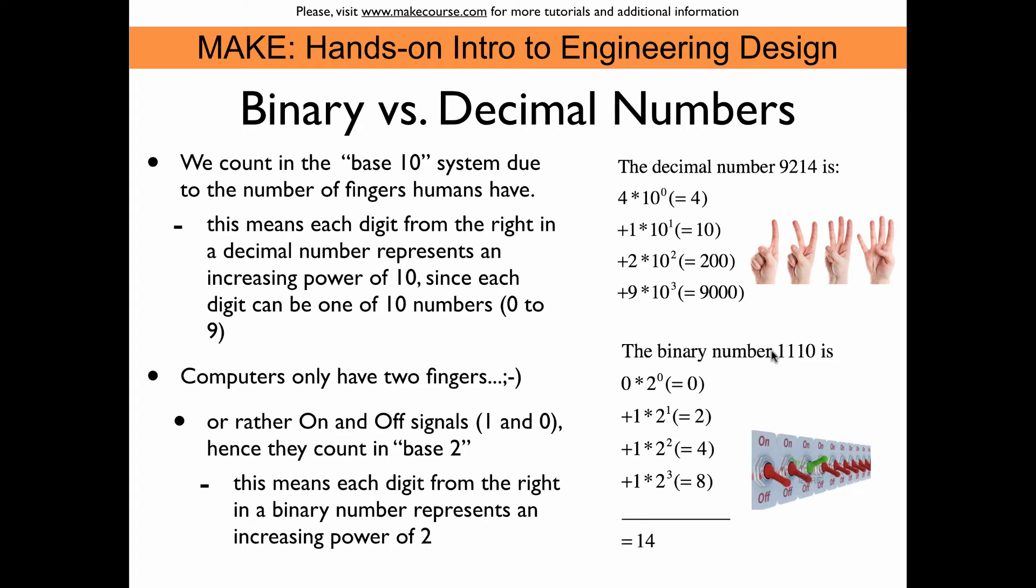we can say that a binary number like 1110 is simply 0 times 2 to the power of 0, and that is 0 times 1, and that gives us a 0. And then we go on to the second digit. That is 1 times 2 to the power of 1. And 2 to the power of 1 is of course 2, so we get 1 times 2, and that is 2. Now we add 1 times 2 to the power of 2, and that is 4. And then we add 1 times 2 to the power of 3, and that is 8. And so if you add all of this up, you get 14. And so this here is the binary representation of 14.